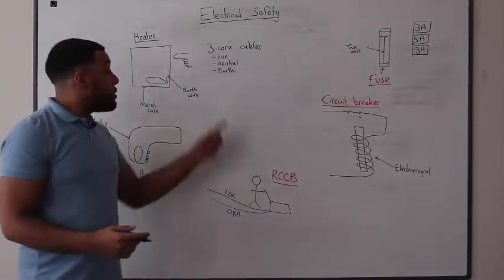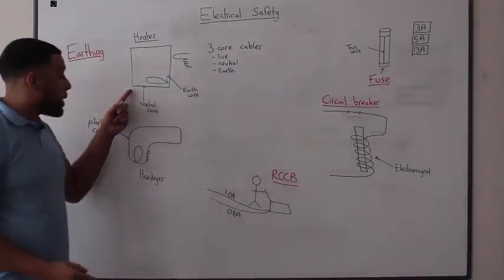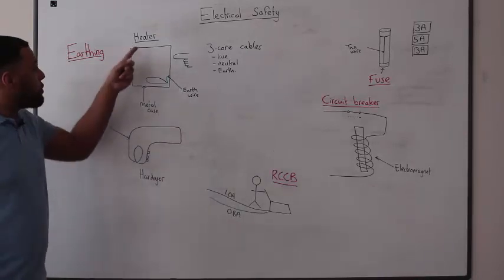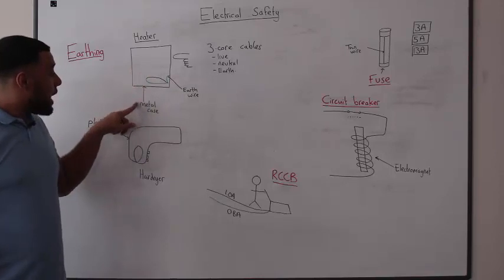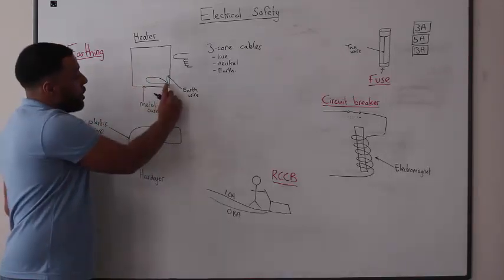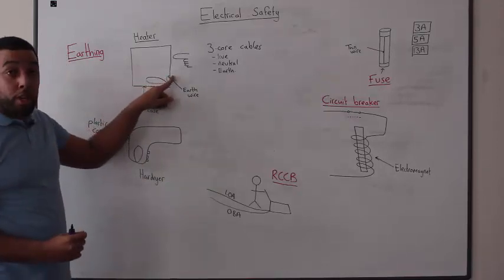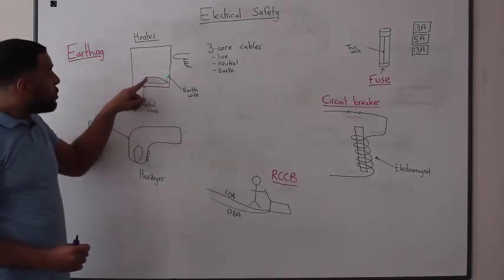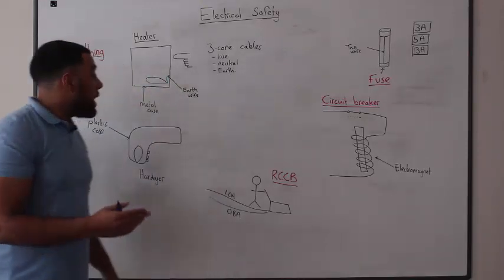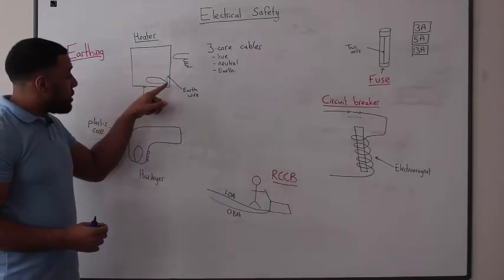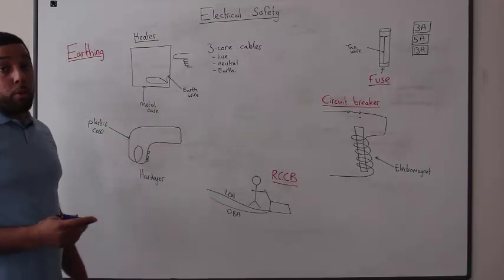Now, we typically use a three-core cable if the appliance has a metal case. What I've done is I've drawn an example of a heater. The heater has a metal case, and you'll see that the earth wire is connected to that metal case. The live and the neutral wire complete the circuit. As long as the live and the neutral wire are connected, then the appliance works perfectly well.